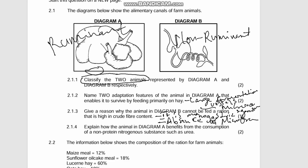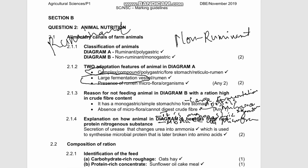The last question, 2.1.4, asks: explain how the animal in diagram A benefits from the consumption of non-protein nitrogenous substances (NPN) such as urea. The benefit is that microorganisms secrete enzymes that convert urea into ammonia, which is then used to synthesize microbial protein that is later broken down into amino acids. This is how the ruminant benefits from consuming NPN substances like urea.